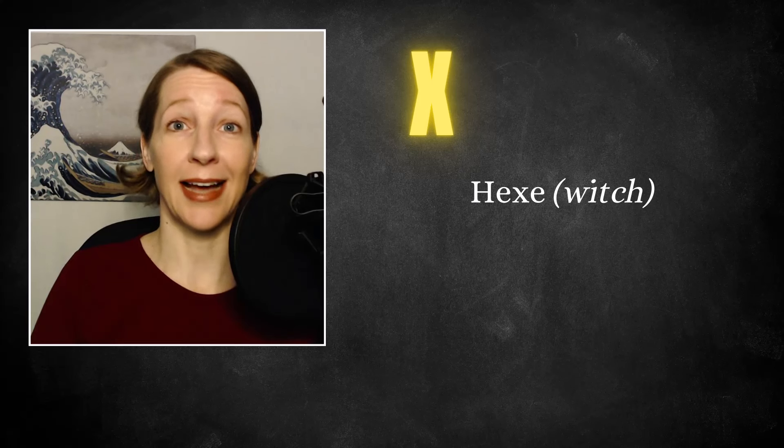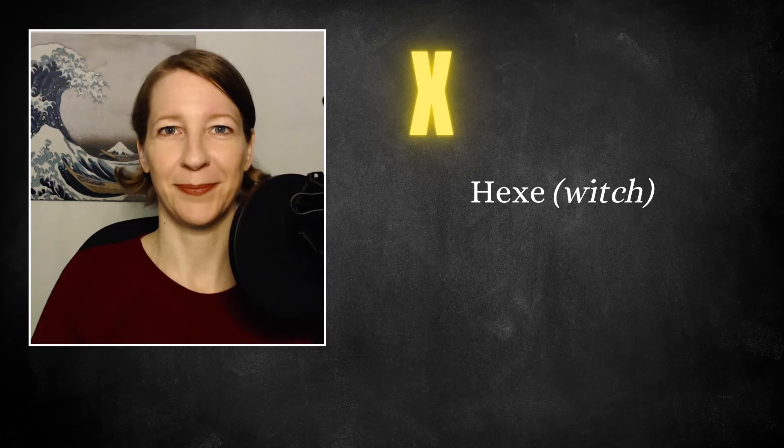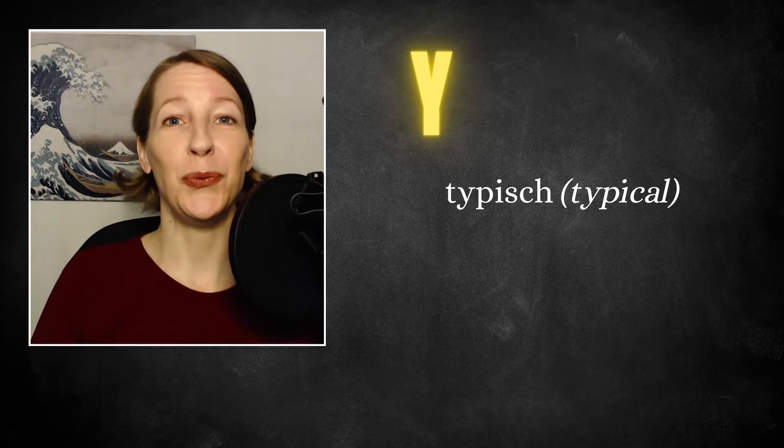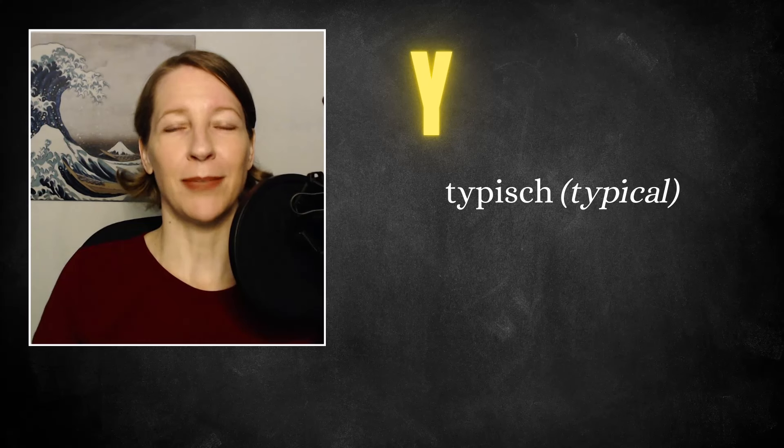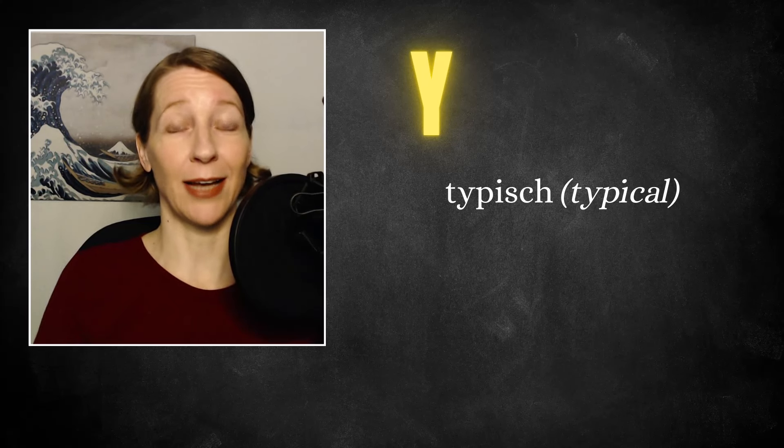X, pronounced like a KS. Hex. Y, pronounced like a Ü. Typisch. Sometimes we use the Y in words that come from other languages and when they're followed by a vowel, we just pronounce them like a J, similar to how they're pronounced in, for example, English. But other than that, it's pronounced Ü.